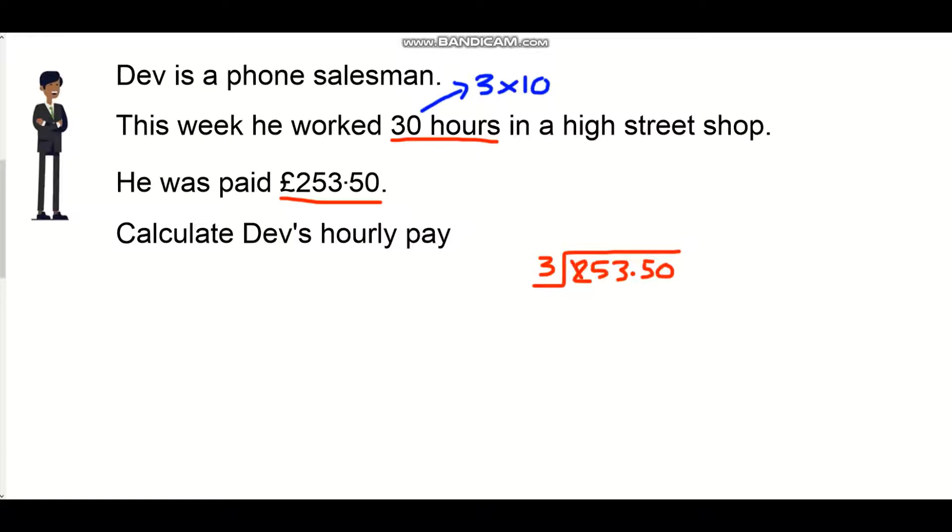3 into 2 doesn't go, so I'm going to cross out the 2 and carry it on. 3 goes into 25, 8 times with a remainder of 1. 3 goes into 13, 4 times with a remainder of 1. 3 goes into 15, 5 times with a remainder of 0, and 3 goes into 0, 0 times. Again, I have to line up my decimal points so that the answer and the divider both have decimal points in the same position.